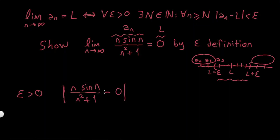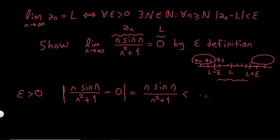Since everything here is positive, this equals n·sin(n) / (n² + 1). In the end, I want to make some inequalities — I want to show this is less than epsilon. So I should bound this expression by something smaller, something like 1/n or 1/(2n), so that when n is big, this thing is small.